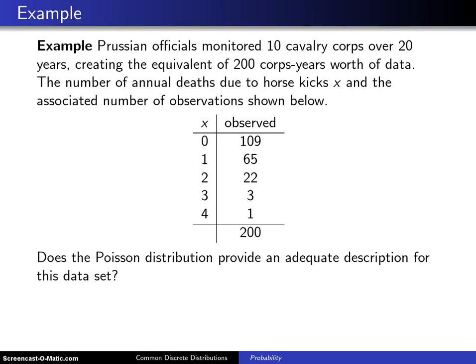This is a probability course rather than a statistics course. However, there is a dataset so closely tied to the Poisson distribution that it is worthwhile taking a look at it before leaving the Poisson distribution behind. If you want to look this dataset up, it might be found by searching under 'horse kick dataset.'